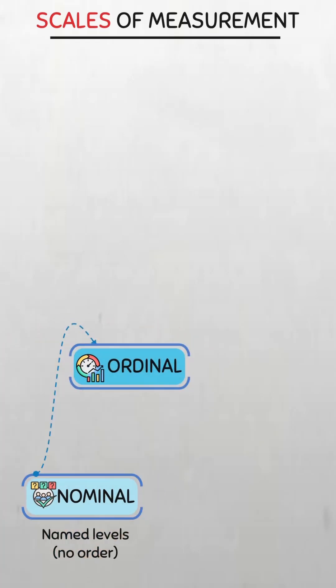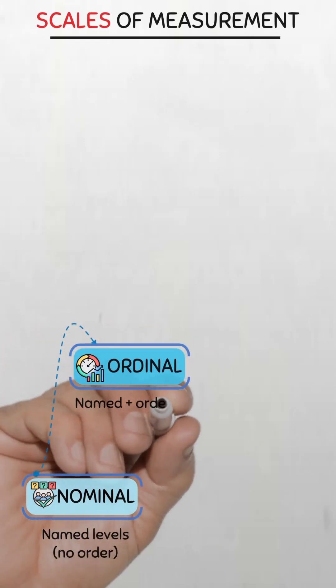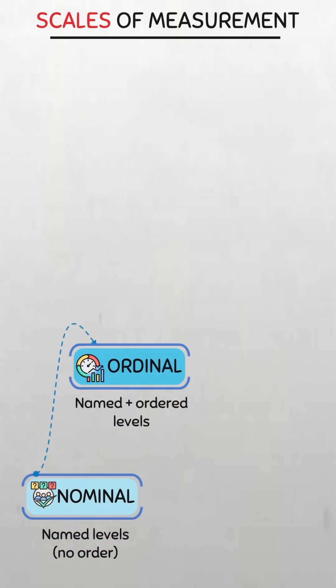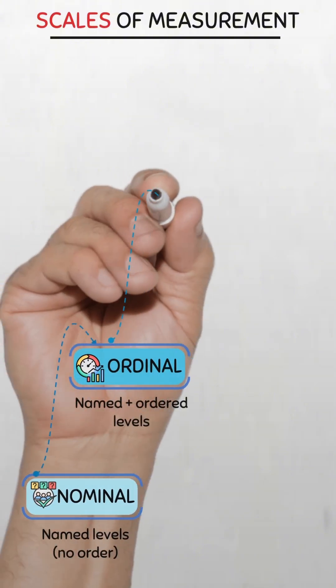Next, ordinal. Here we name and order categories, like disease severity: mild, moderate, severe. There's a clear order, but the jump from mild to moderate isn't necessarily the same as from moderate to severe.